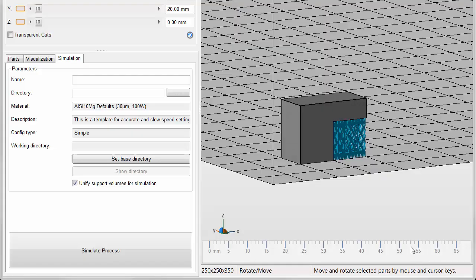Going into NetFab now, we have a part with the lattice support structure, and we go over to the Simulation tab and click Simulate Process.